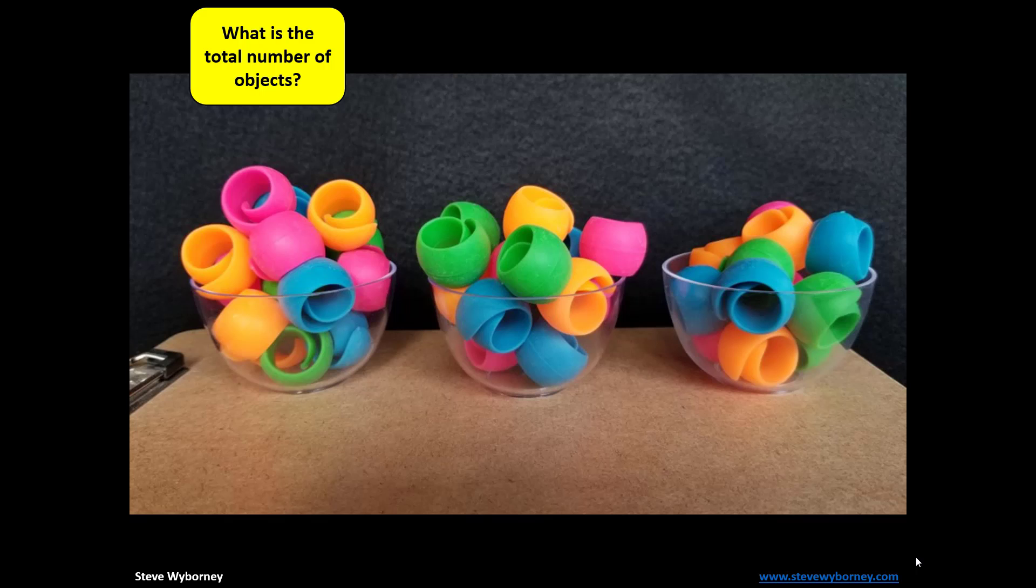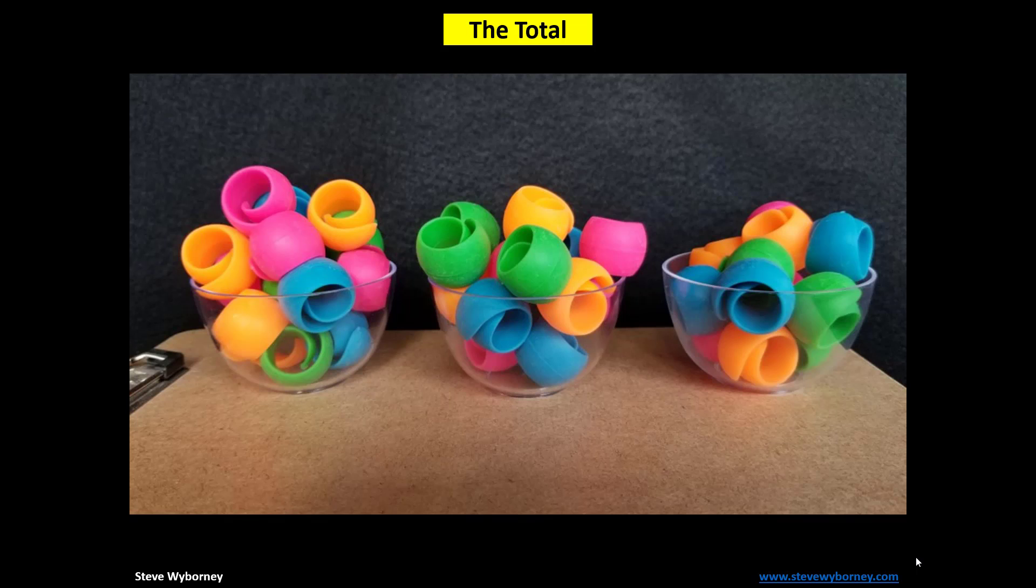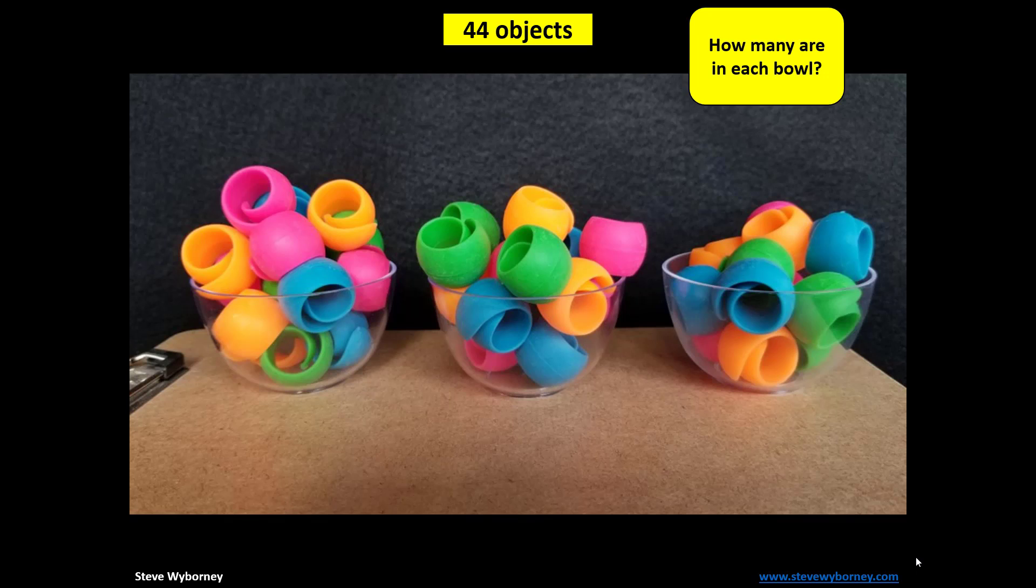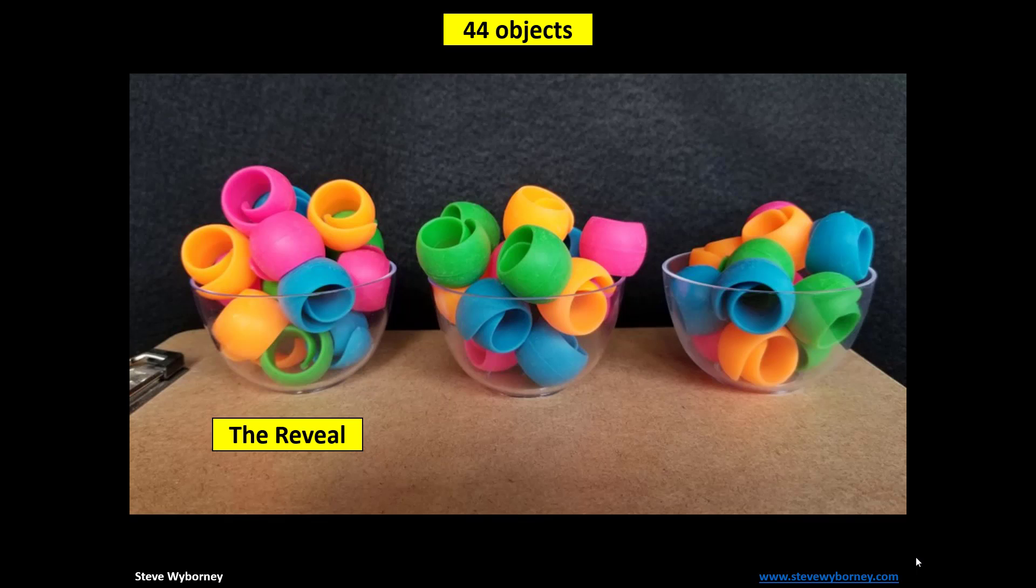Then the question, what is the total number of objects? Then the total is revealed. This time it's 44. Then the question, how many are in each bowl? Followed by how many are in the first bowl? And then the reveal. This time the number in the first bowl is 17. And then two questions at once, pointing to the second bowl and the third bowl, which is followed by two reveals that take place one at a time. In this case, those numbers are 15 and 12.